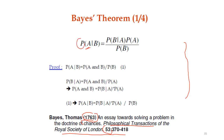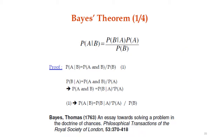Bayes' Theorem states: the probability of A given B equals the probability of B given A, multiplied by the probability of A, divided by the probability of B. Through cross multiplication, we can show that P(A and B) equals P(B|A) × P(A), meaning the joint probability of A and B can be expressed using the conditional probability.